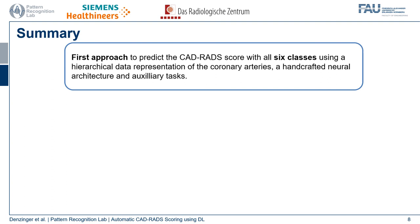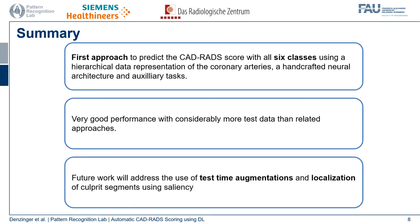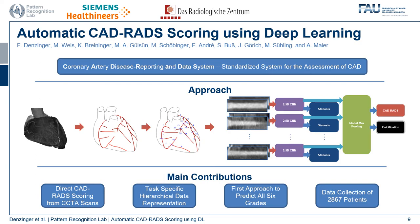In summary, we present the first approach to predict the CAD-RADS score with all six classes, using a task-specific data representation and neural architecture leveraging two auxiliary tasks. We achieve very good performance with significantly more test data than related approaches. We believe our approach can be further improved by the use of test-time augmentations, and culprit segments can be detected not only by the stenosis grade scores — which are also an output of the network — but also through visualization techniques enabled by the max pooling operation. Thank you for watching, and I would be happy to answer your questions during the live sessions.